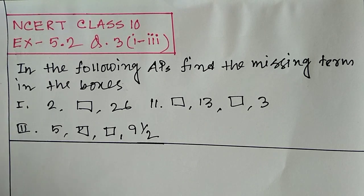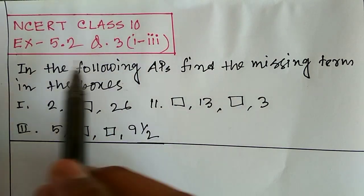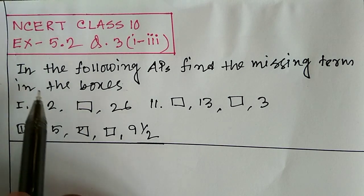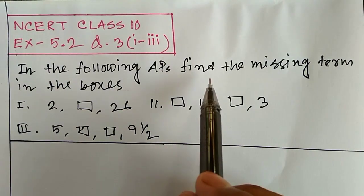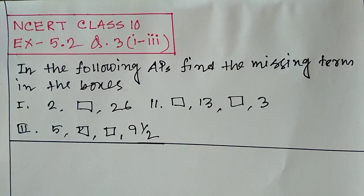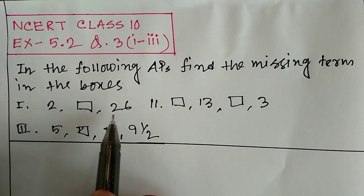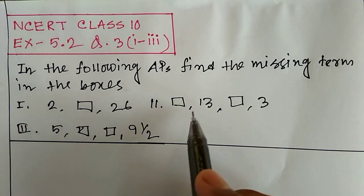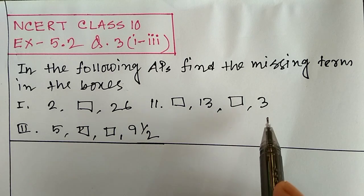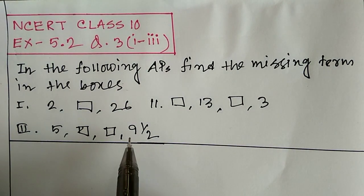Hello friends, we now solve question number 3(i) to 3(iii) of Exercise 5.2. In the following, find the missing term in the boxes. Question 1 is: 2, box, 26. Question 2 is: box, 13, box, 3. Question 3 is: 5, box, box, 9½.